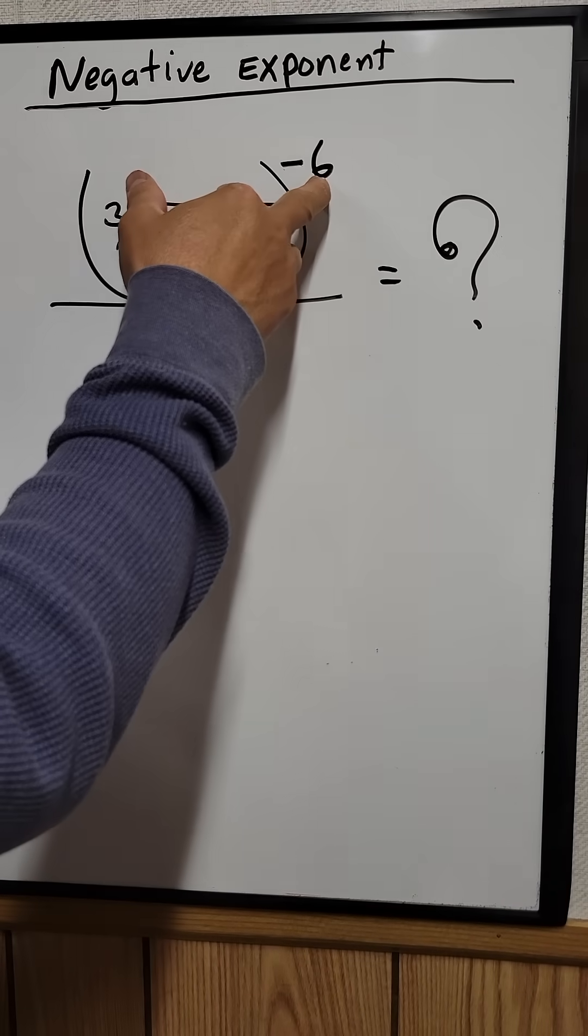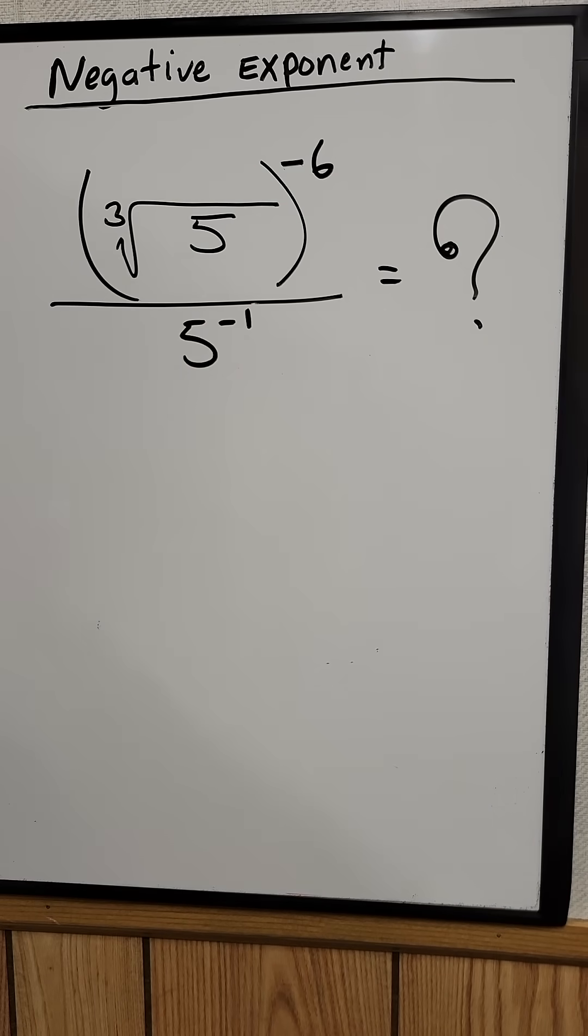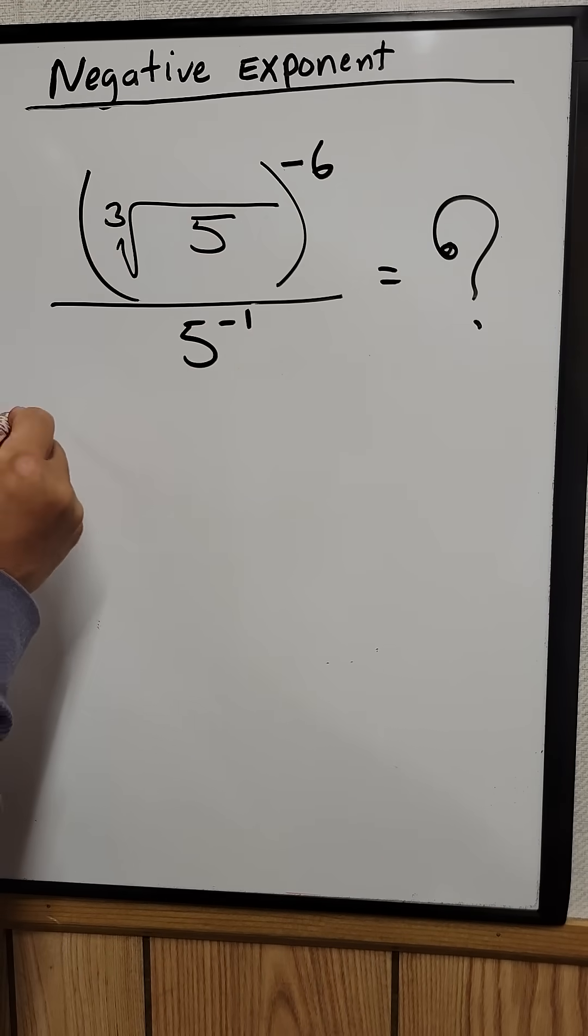A cube root of 5 raised to the negative 6 divided by 5 raised to the negative 1 equal to what? So let's work with the numerators first.